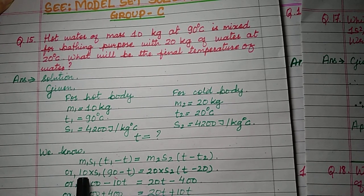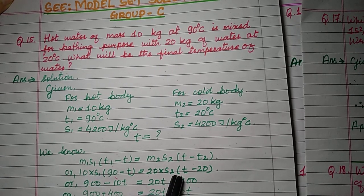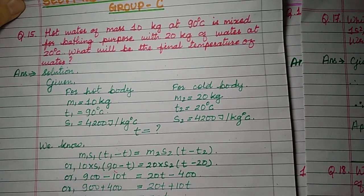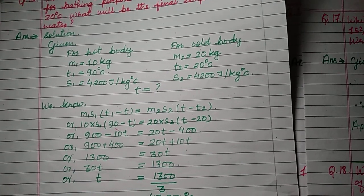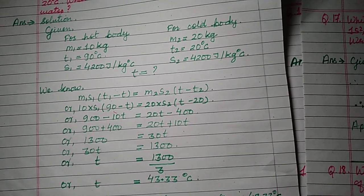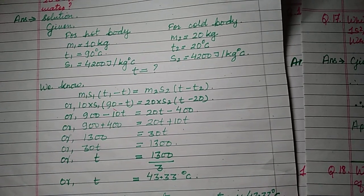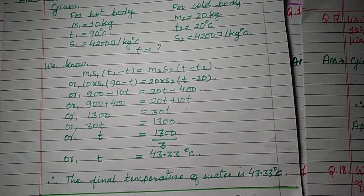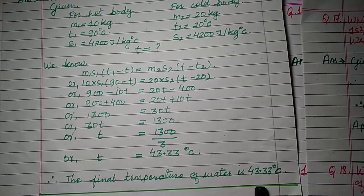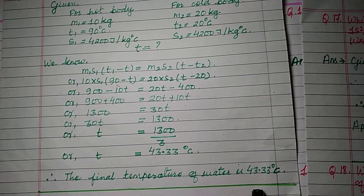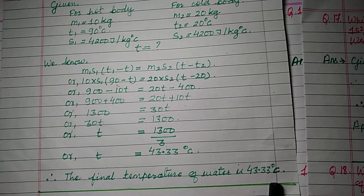By putting in the values, since the specific heat capacity is water in both cases, s can be cancelled out. By doing further calculation you find the answer: 43.33 degrees Celsius. You must do this calculation on your own. So the final temperature of the water is 43.33 degrees Celsius. This is the numerical solution of question number 15.